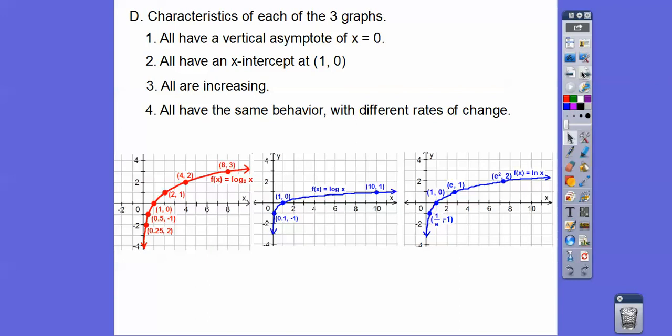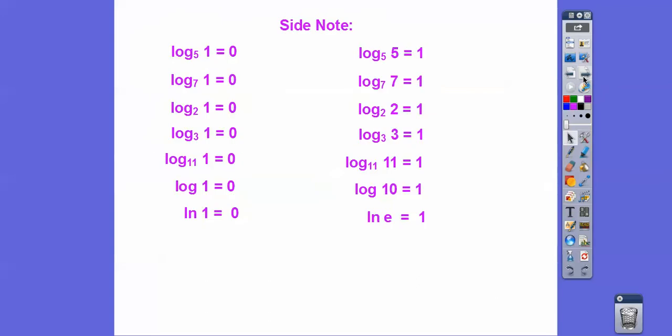And then all have (B, 1), where B is the base. So here's log base 2, so this was (2, 1). This was log base 10, so here's (10, 1). This was log base e, so this was (e, 1). So whatever the base is, its corresponding y-value is 1.